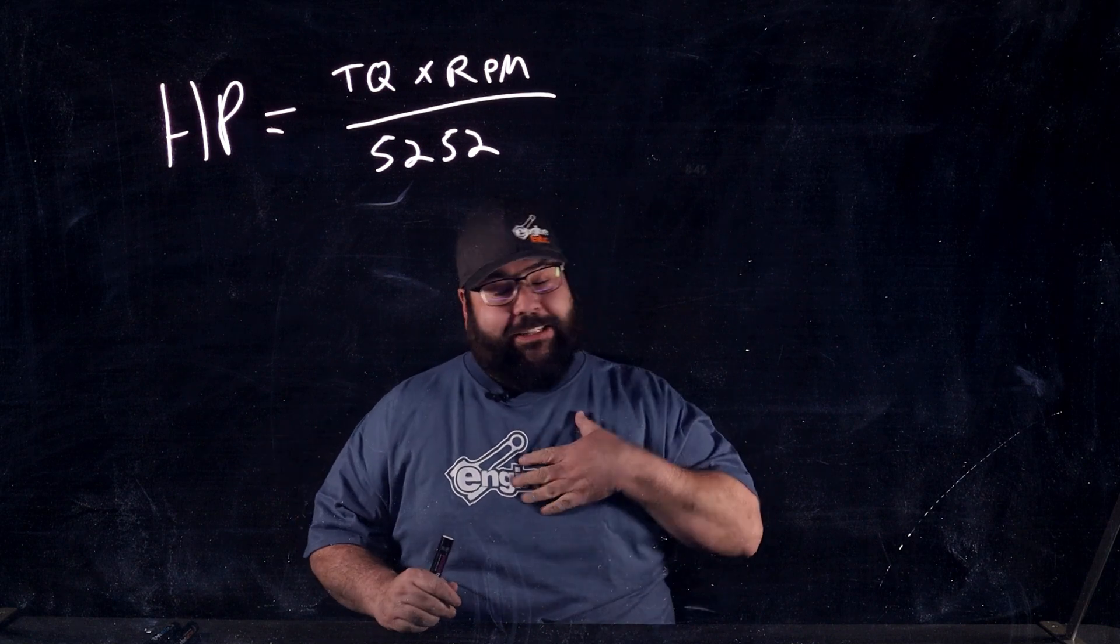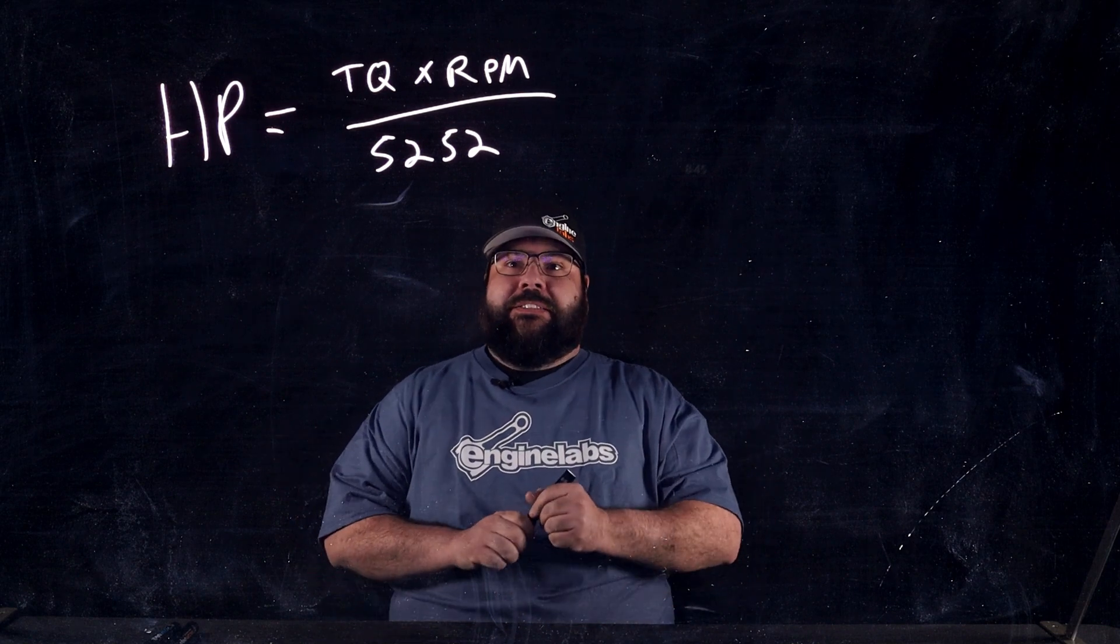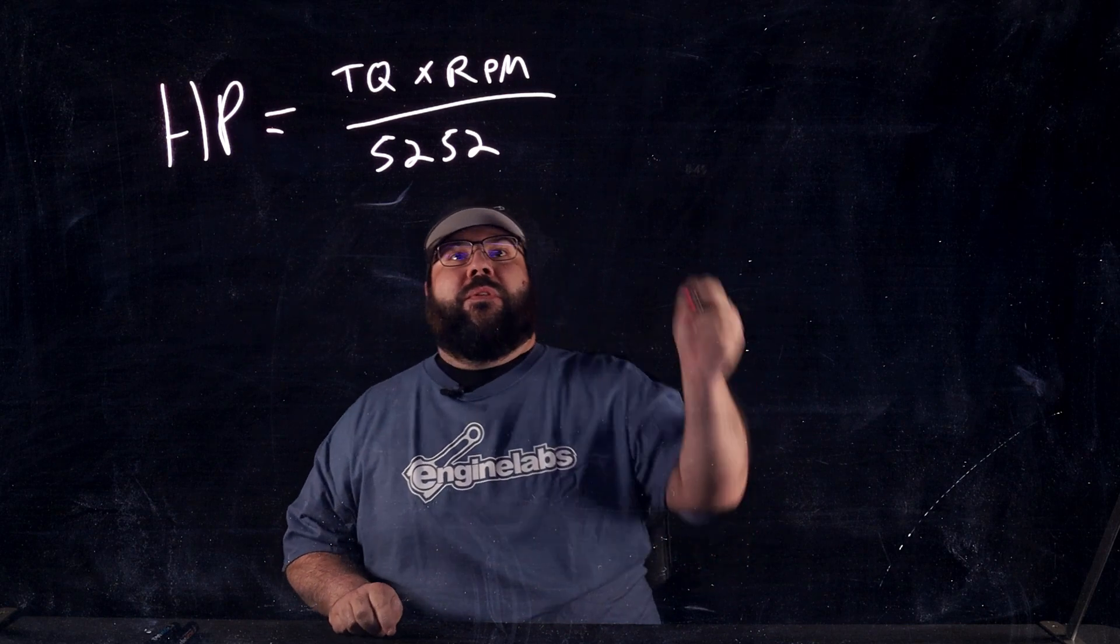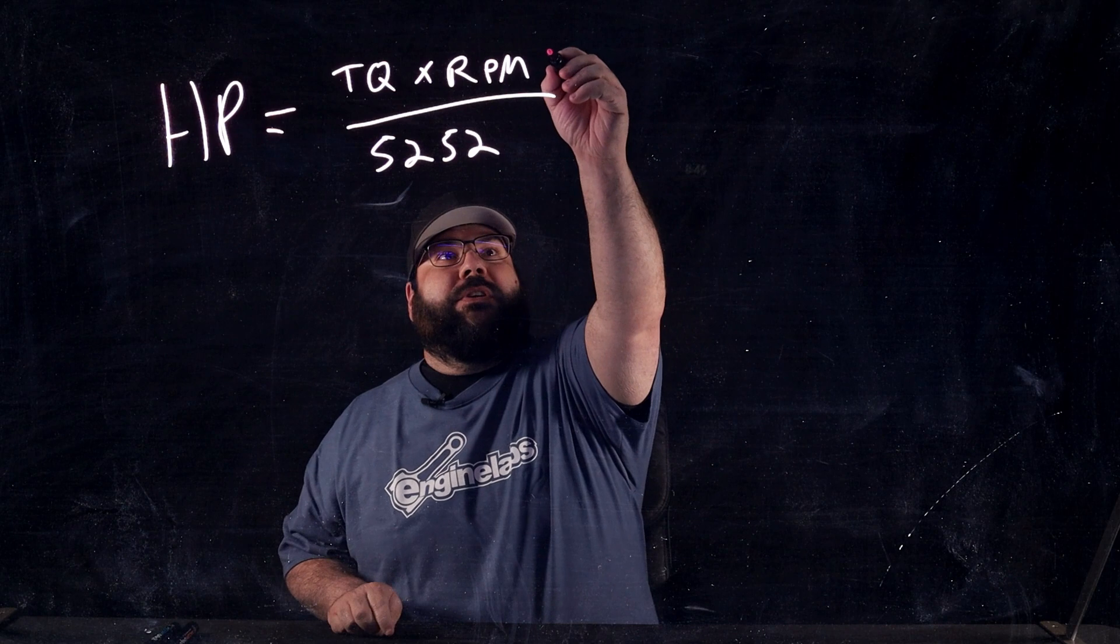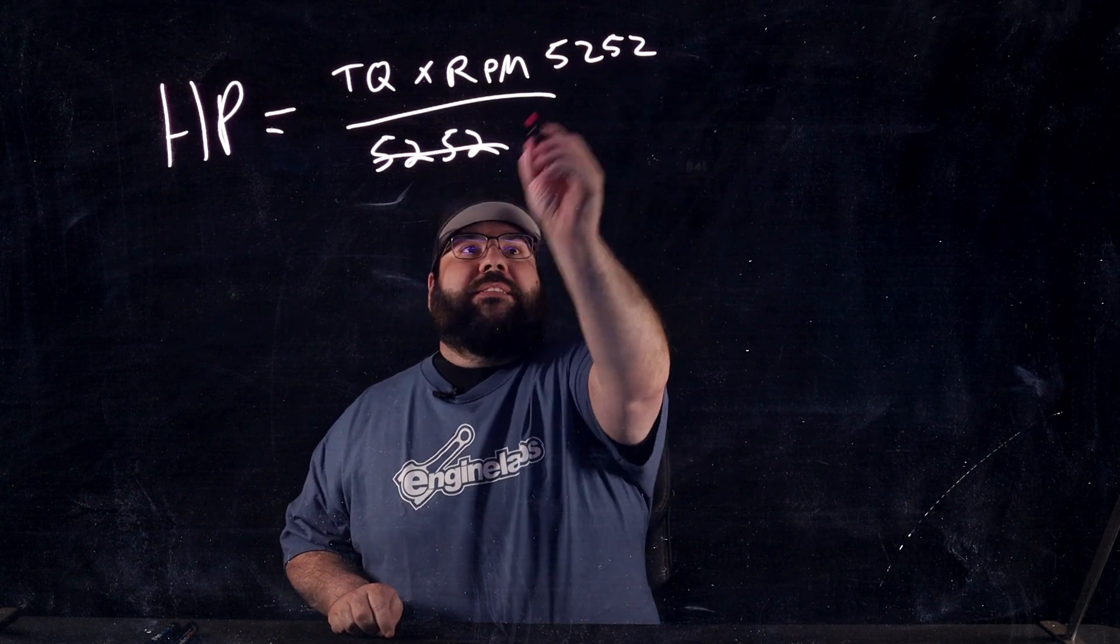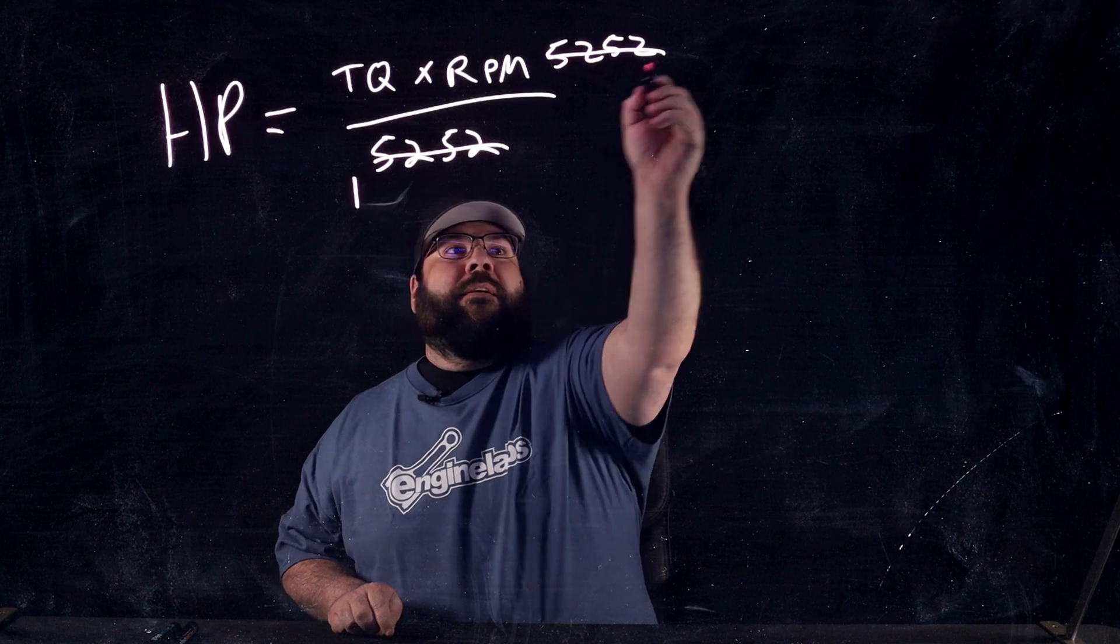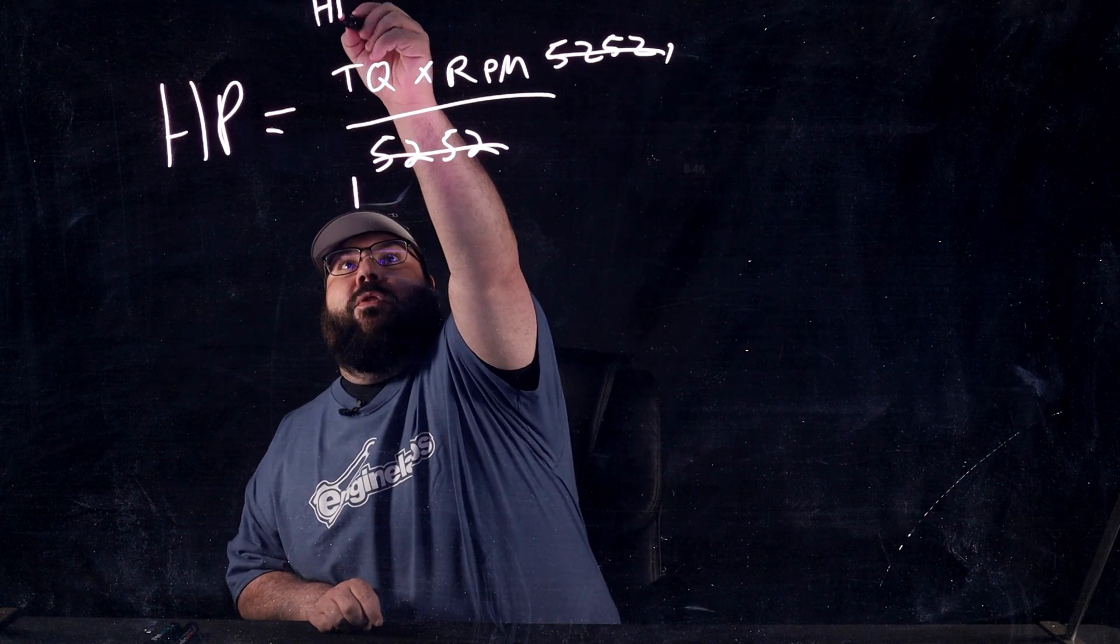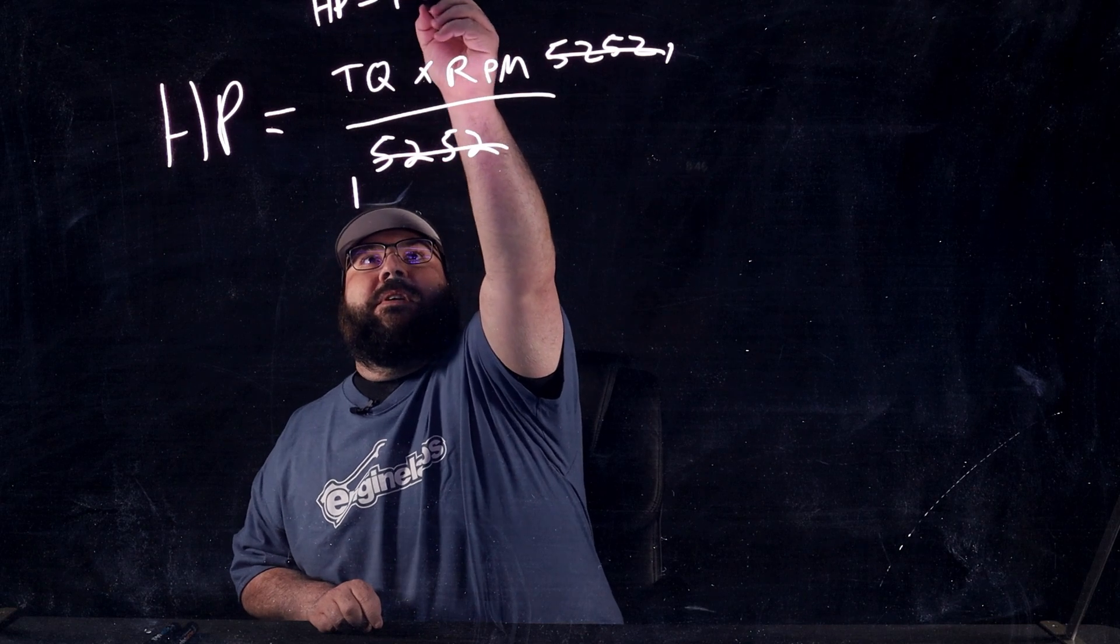For the rest of us, at least for me anyway, it took some learning. So, at 5252 RPM, if RPM equals 5252, these cancel each other out, become one, and we can simplify that as horsepower equals torque.